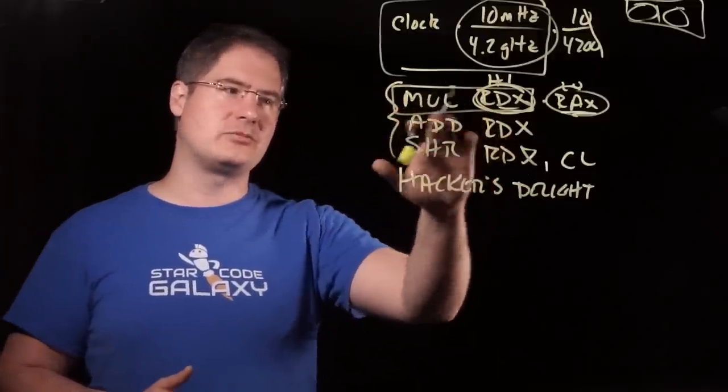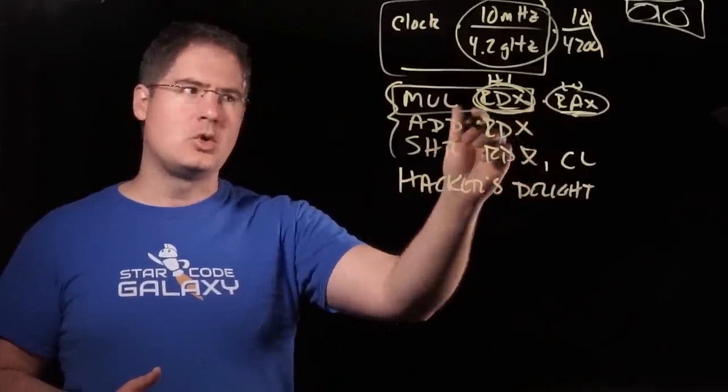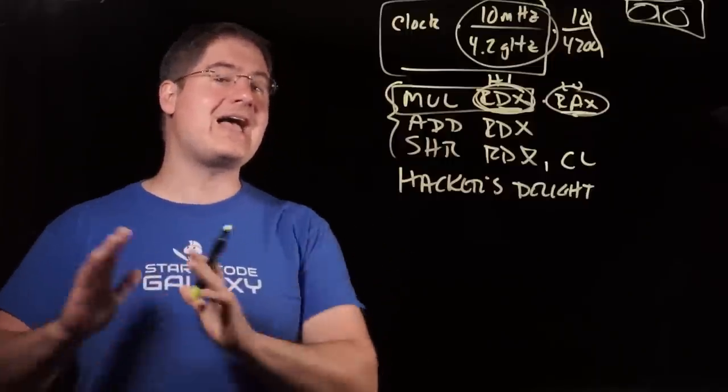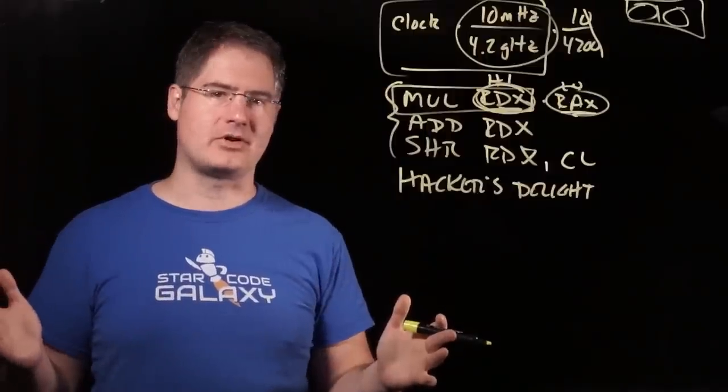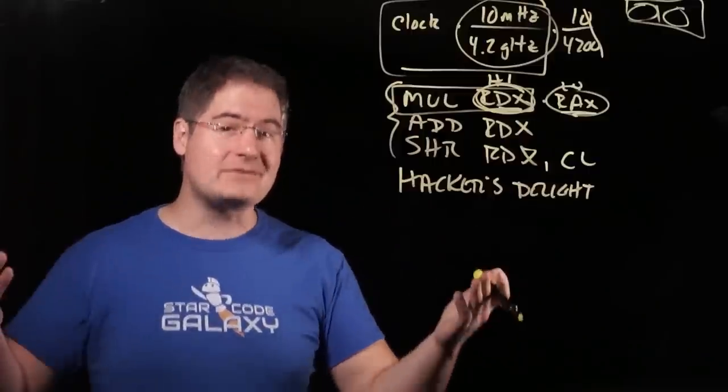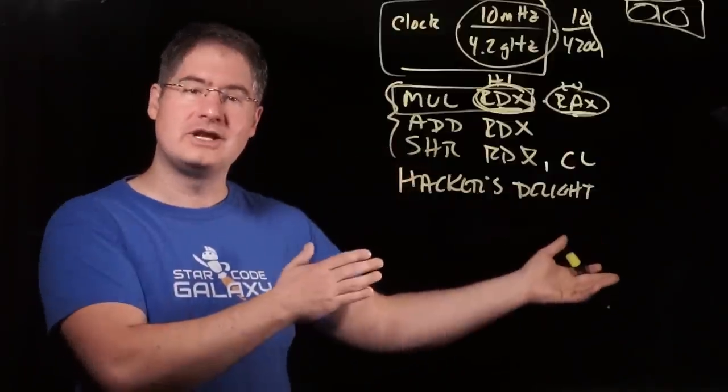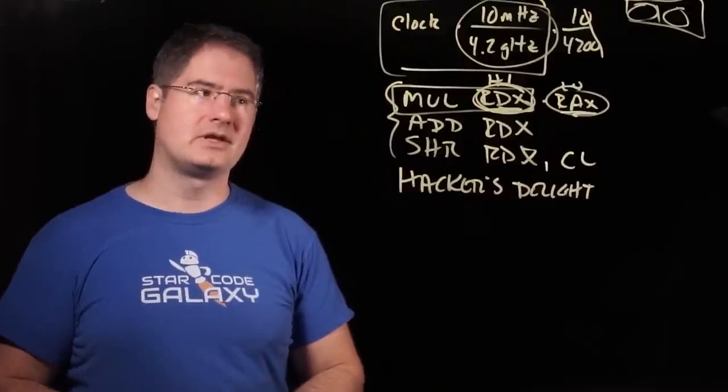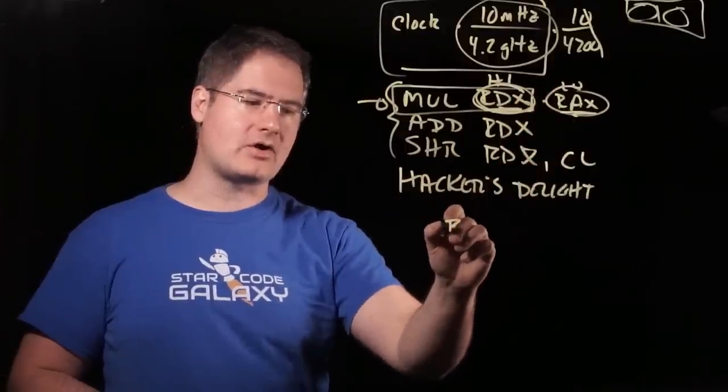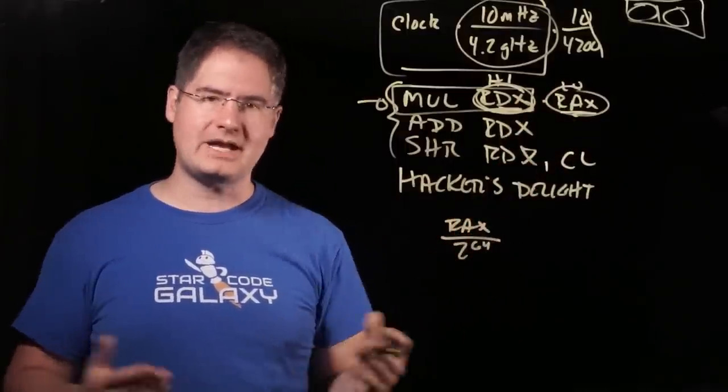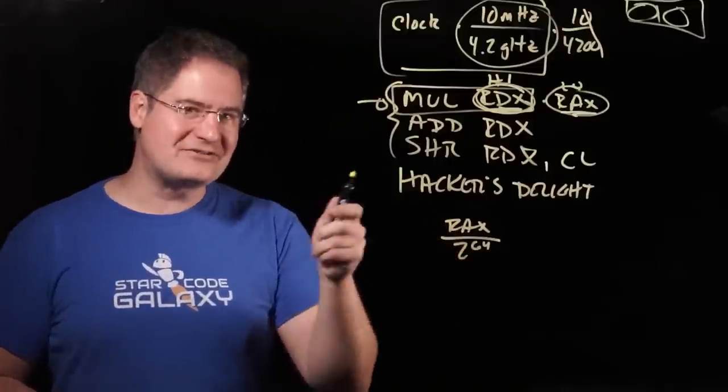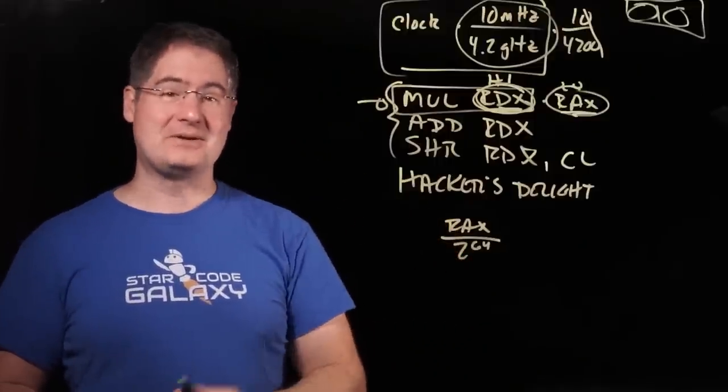Well, if you think about how this integer multiply works, we're getting back the high 64 bits. What are the high 64 bits of a 128-bit number? It's the 128-bit number divided by 2 to the 64th, right? We removed the whole bottom 64 bits of the number. So this instruction implicitly multiplies by RAX and then divides by 2 to the 64, right? So we're already doing a divide. We're doing a divide by 2 to the 64.